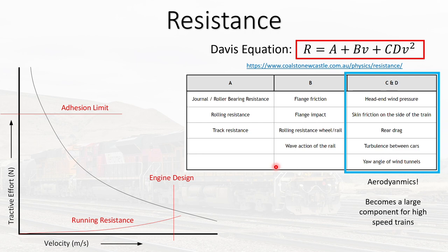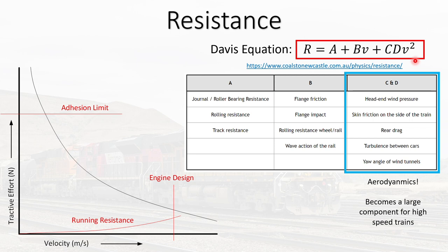Now let's talk about resistance — the resistance your train experiences when on the track, which is aptly characterized by the Davis equation. This equation has three components. The first component is independent of velocity and includes rolling resistance, track resistance, and general resistance. The second component increases with velocity and includes flange friction, flange impact, and other factors — intuitively, the faster the train runs, the more flange impact it experiences. The third component increases with velocity squared, and because of that it becomes extremely high for high-speed trains.